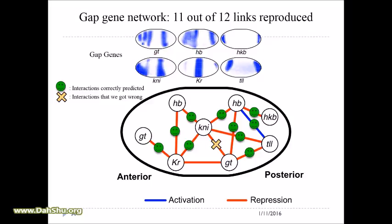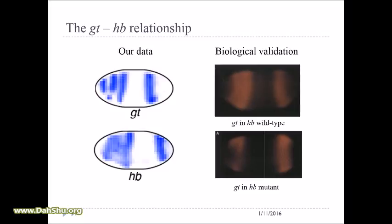The next step is knockout experiments. The biologists showed: this is the giant gene when hunchback is wild type — that's the signature phenotype for this early stage, that's our data. If you make hunchback a mutant then giant changes. That's proof that they interact.